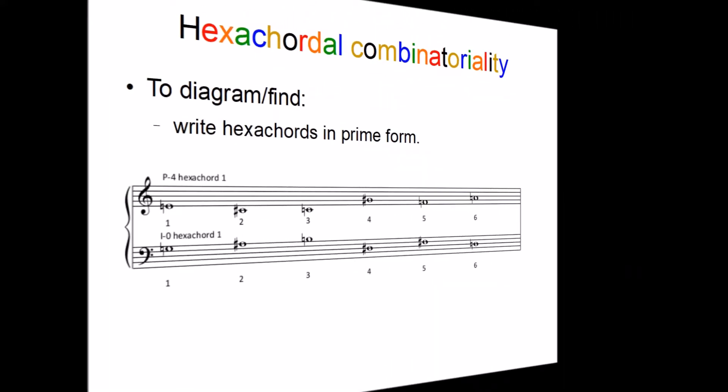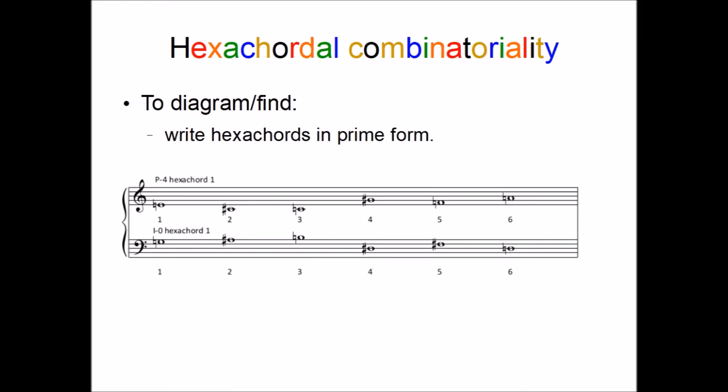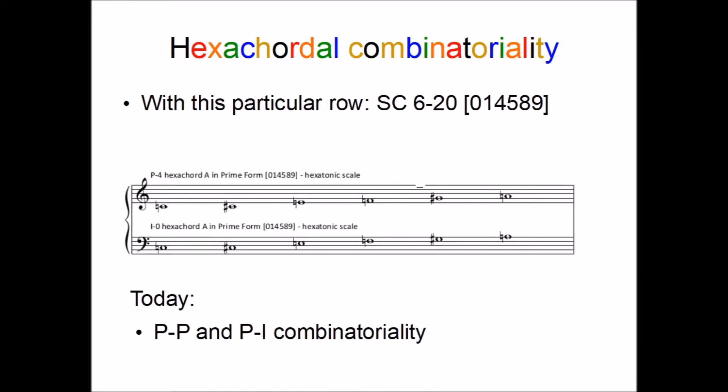To diagram and find combinatorial relationships, write the hexachords in their unordered prime form. If they both reduce to the same prime form, then they will form an aggregate. With this particular row, that is set class 6-20, 014589, which is the hexatonic scale.